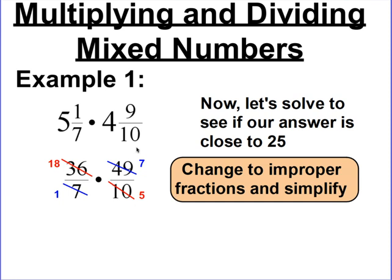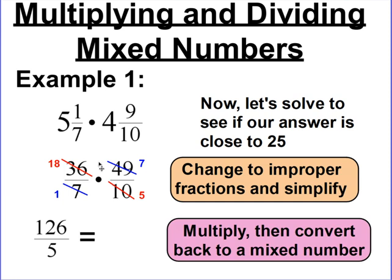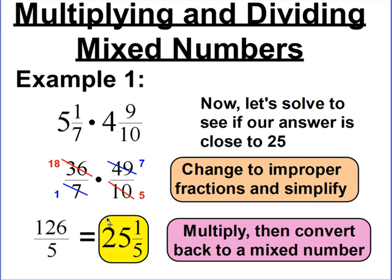Now we have our simplified fractions. Let's multiply sideways, like we did in the previous lesson: 18 times 7 gives you 126, and 1 times 5 gives you 5. So there's our fraction 126 over 5. The only thing we need to do is convert it back into a mixed number by doing long division — see how many times 5 can go into 126. The answer is 25 with a remainder of 1, so we write that as 25 and 1 fifth. Our estimate was 25, and our actual answer is 25 and 1 fifth — those are pretty close, so we did all of our work right.